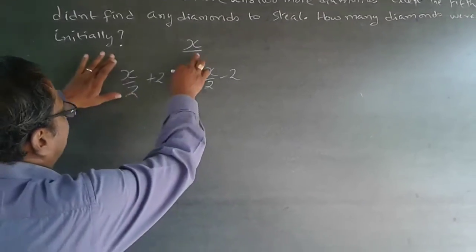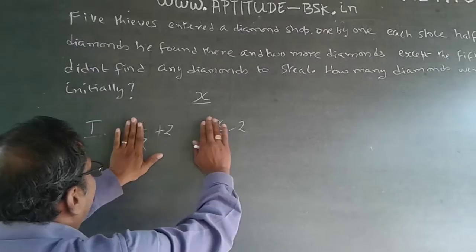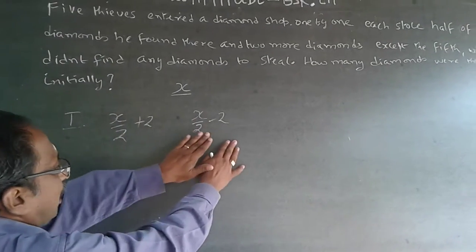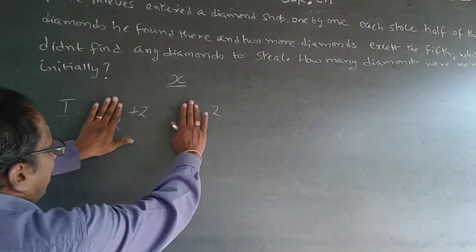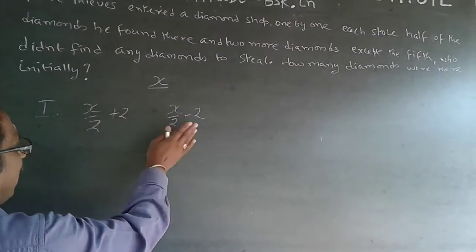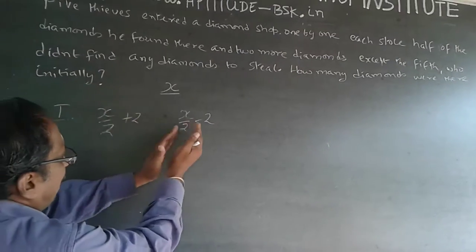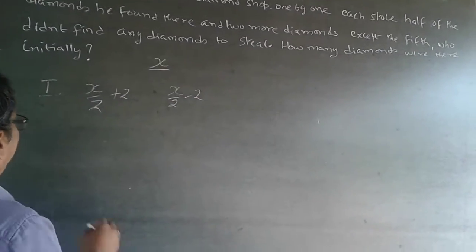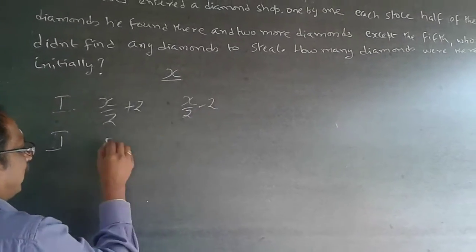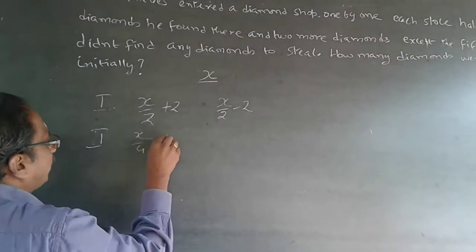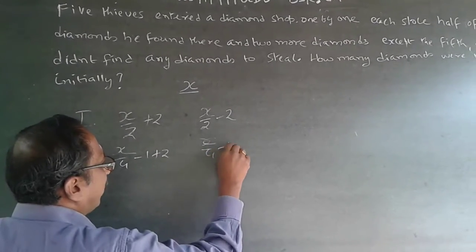Rather than computing X minus the full expression, write X/2 on both sides — if it is plus two here, it will be minus two on the remainder side. The second person takes half of whatever is available. So the remainder after the second thief is X/4 minus one minus two.